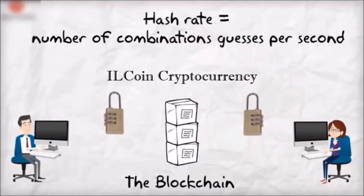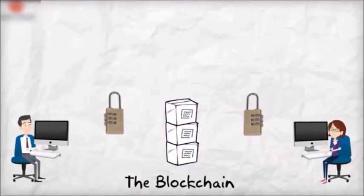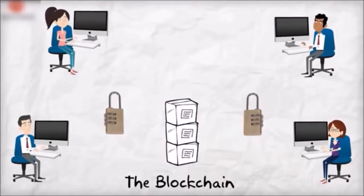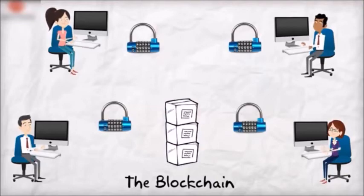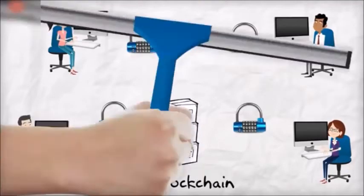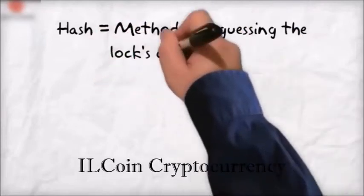Since the Bitcoin network wants to keep the time between blocks created in the blockchain constant, as more miners or computing power are added to the network, it will become harder to guess the combination. Just imagine that as more and more people try and guess the combination, you will be given locks with more possible combinations. A hash is just a method used to guess the combination for the lock.